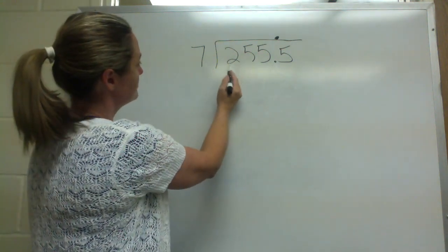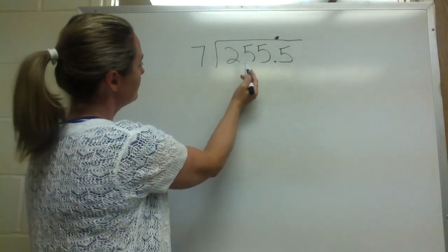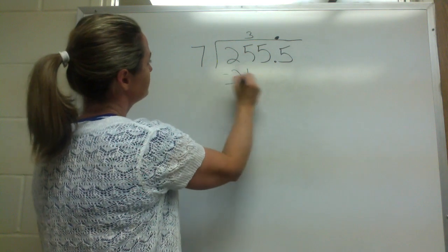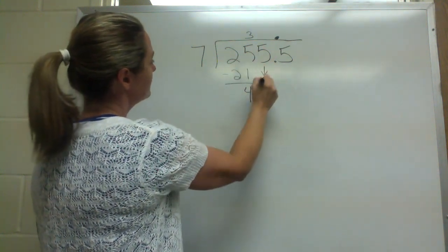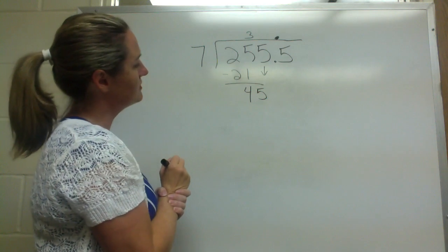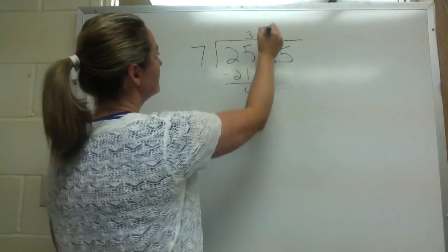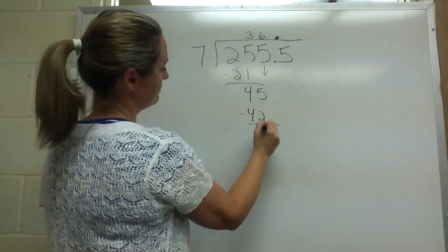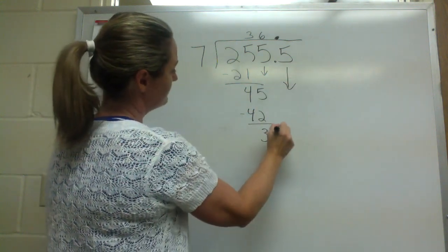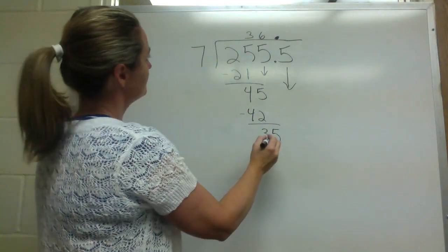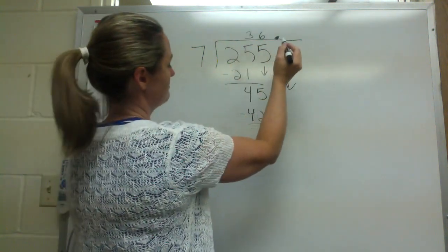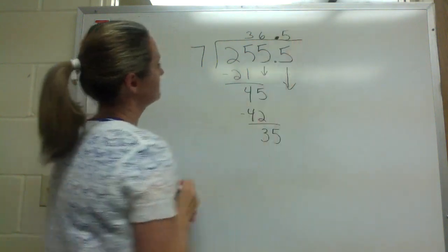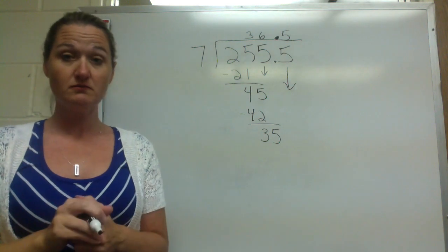Seven goes into 2 — no. Goes into 25, yes, it goes in three times, so that gives me 21. Four — drop down to five. Seven goes into 45, six times. Six times seven is 42. Three. Now just bring down that five — 35. Seven goes into 35, five times. The five is behind the decimal, so this also goes behind the decimal. So my answer is 36 and 5 tenths.